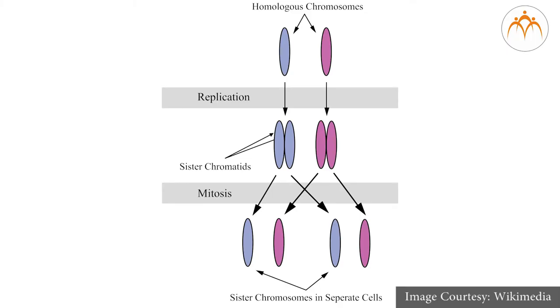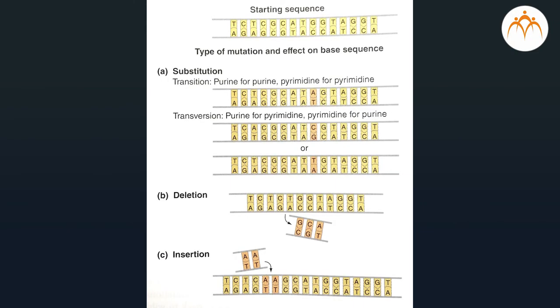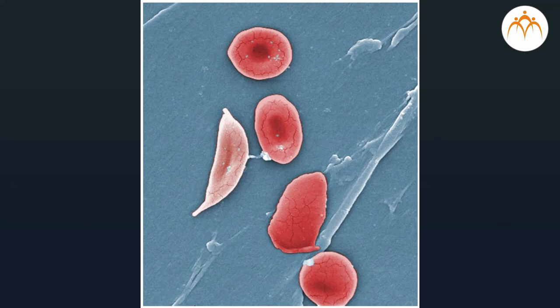Each time cells divide to form new cells, the vast chemical information must be copied so that the daughter cells have the information required to function. Inevitably, each time the DNA is copied there are minute changes. Most such changes are caught and repaired immediately; however, if the alteration is not repaired, the change may result in an altered protein. Altered proteins may not function normally. Genetic disorders are conditions that result when malfunctioning proteins adversely affect the organism. Some mutations may be minor, but some may be considerable — for example, a mutation may cause genetic disorders like sickle cell anemia.